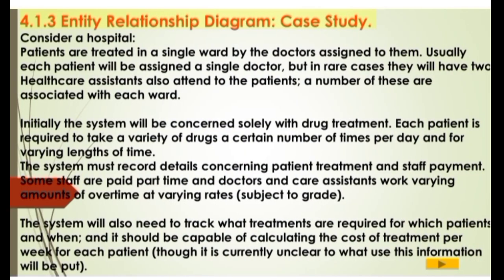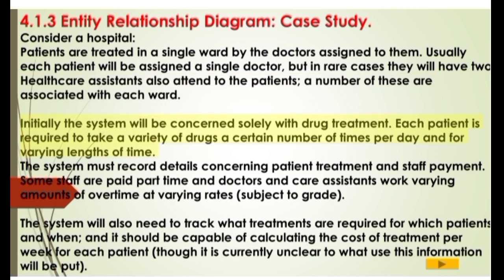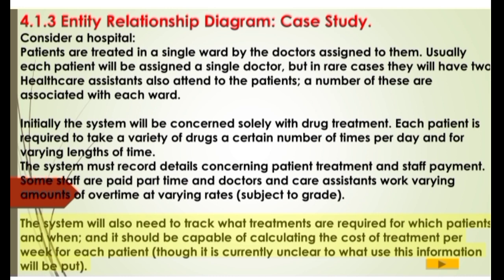Entity Relationship Diagram Case Study: Consider a hospital. Patients are treated in a single ward by the doctors assigned to them. Usually each patient will be assigned a single doctor, but in rare cases they will have two. Healthcare assistants also attend to the patients; a number of these are associated with each ward. Initially the system will be concerned solely with drug treatment. Each patient is required to take a variety of drugs a certain number of times per day and for varying lengths of time. The system must record details concerning patient treatment and staff payment. Some staff are paid part-time, and doctors and care assistants work varying amounts of overtime at varying rates subject to grade. The system will also need to track what treatments are required for which patients and when, and it should be capable of calculating the cost of treatment per week for each patient.